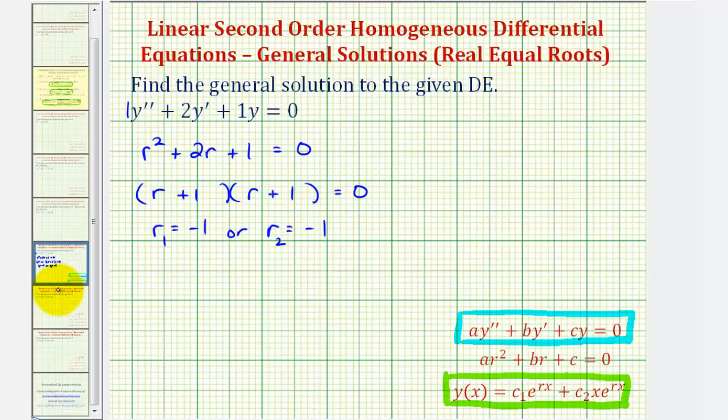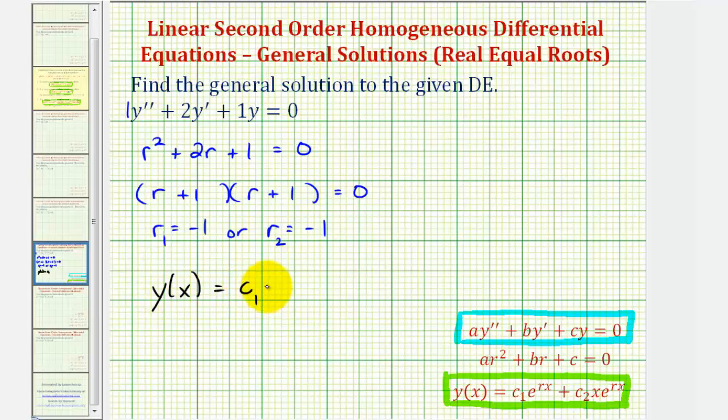Going back to our example, since we have two real equal roots, the general solution is y of x equals c sub one times e raised to the power of r times x, which would just be negative one times x, or negative x, plus c sub two times x times e to the negative x.